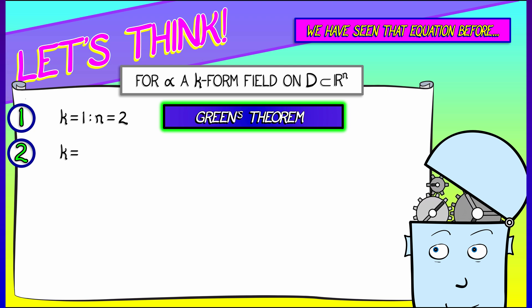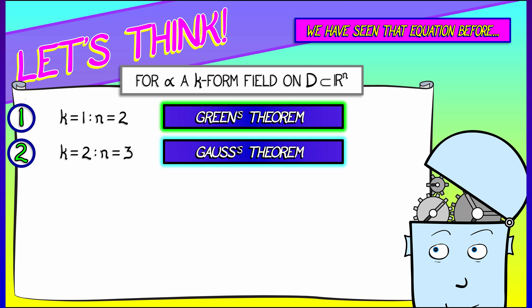In the case where k equals 2 and n equals 3, well, that's really just Gauss' Theorem, isn't it? A two-form field, domain in 3D, yep.